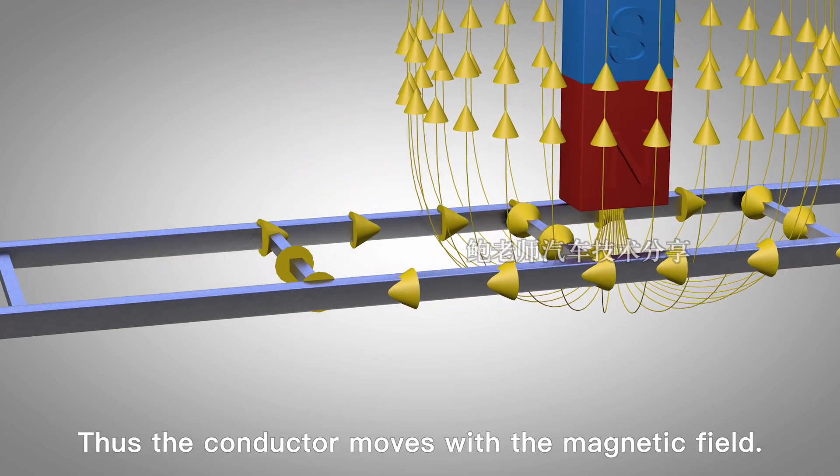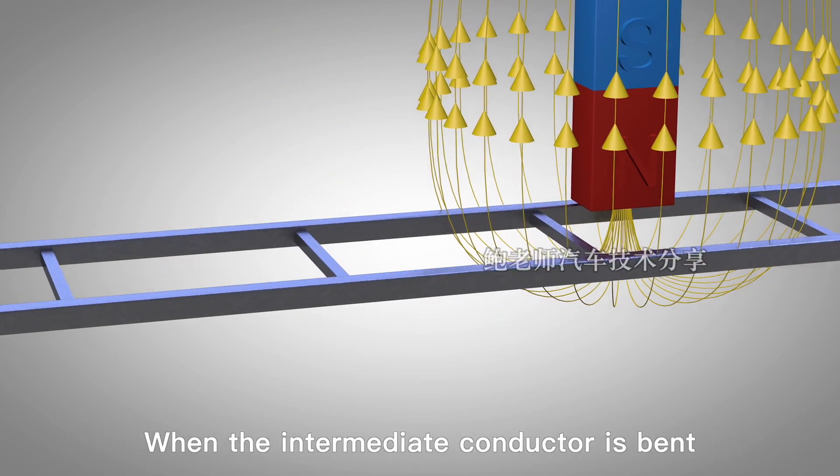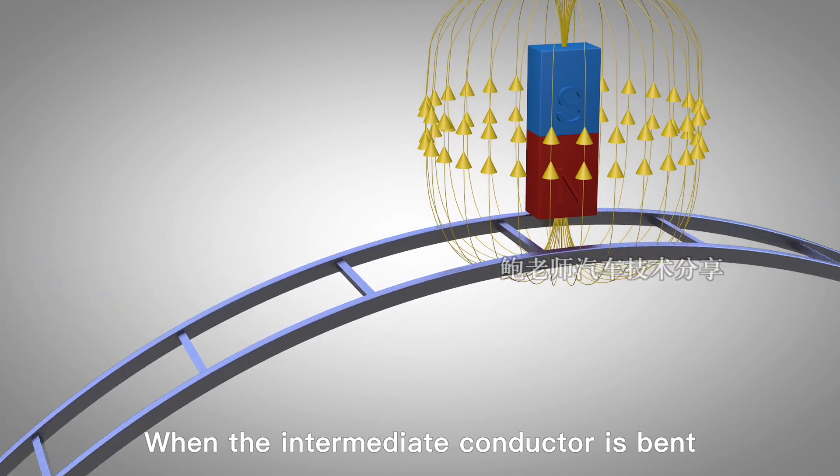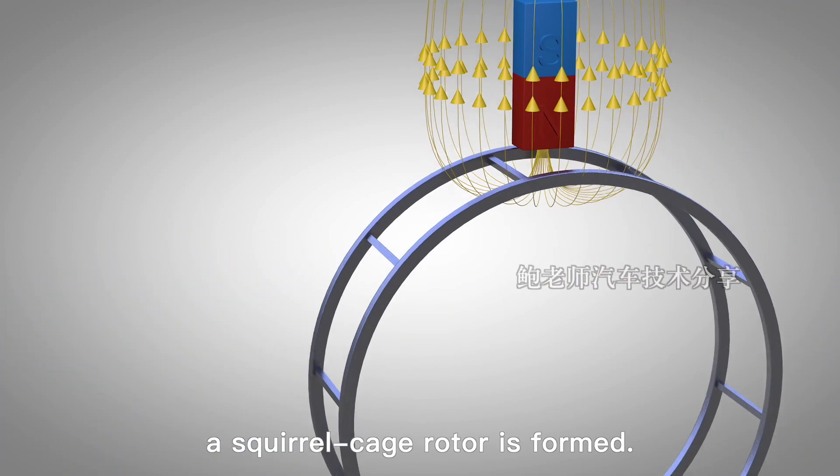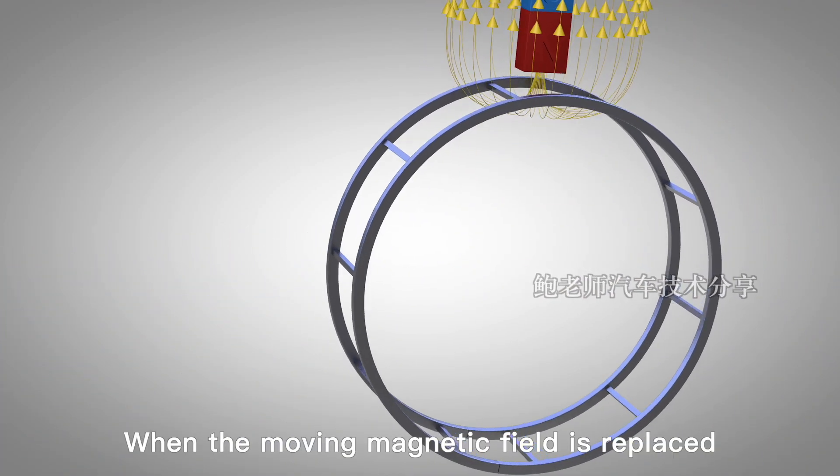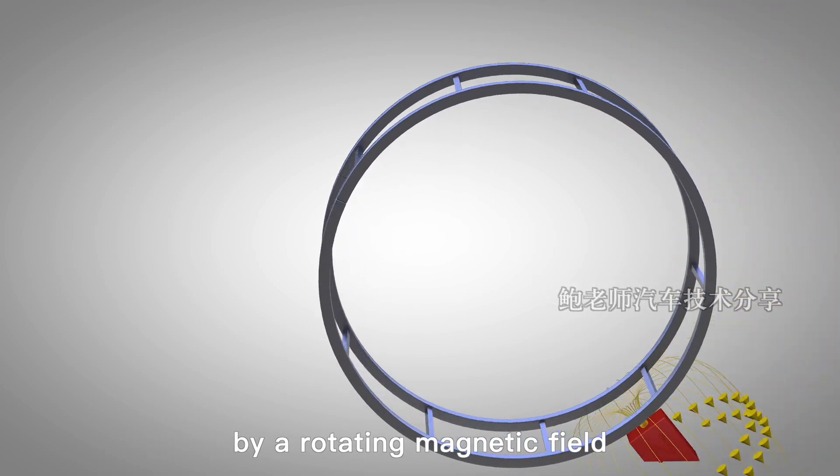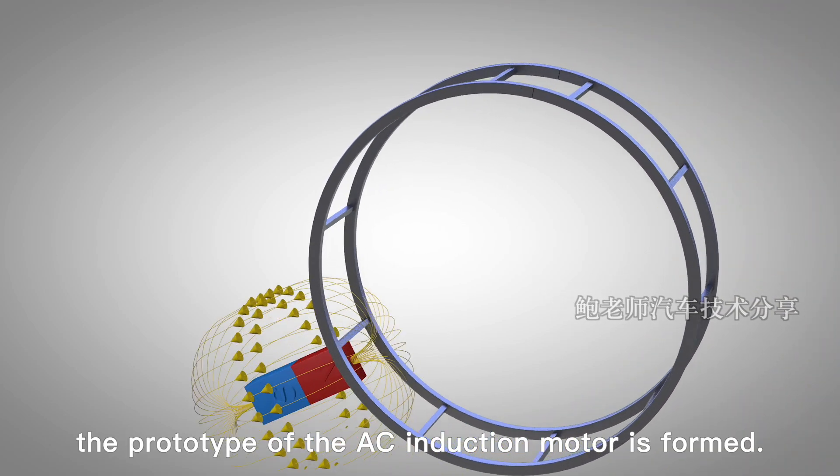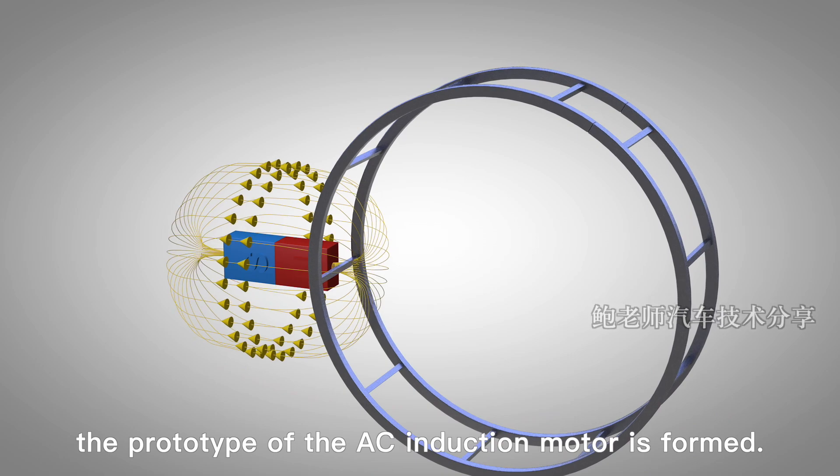Thus, the conductor moves with the magnetic field. When the intermediate conductor is bent, a squirrel-cage rotor is formed. When the moving magnetic field is replaced by a rotating magnetic field, the prototype of the AC induction motor is formed.